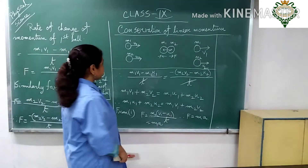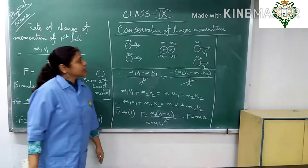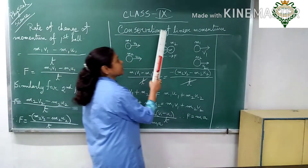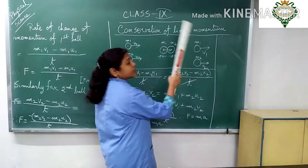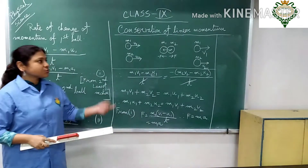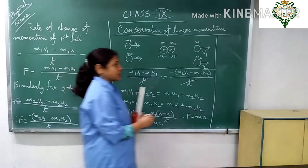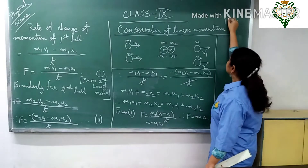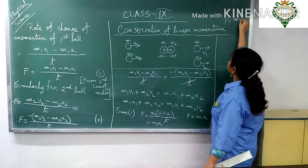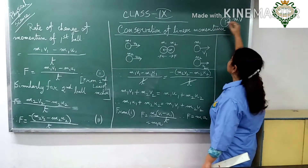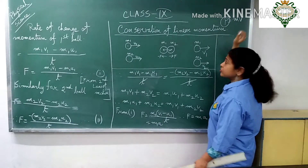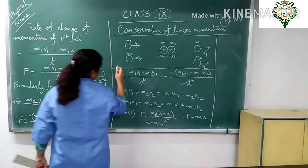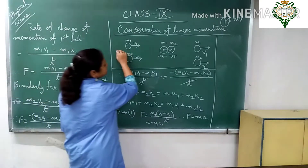Good morning, Class 9 students. Today I am discussing conservation of linear momentum. What is momentum? I have already discussed this previously. Momentum P is equal to mass into velocity. Linear means when a body or two bodies are moving in a straight line.